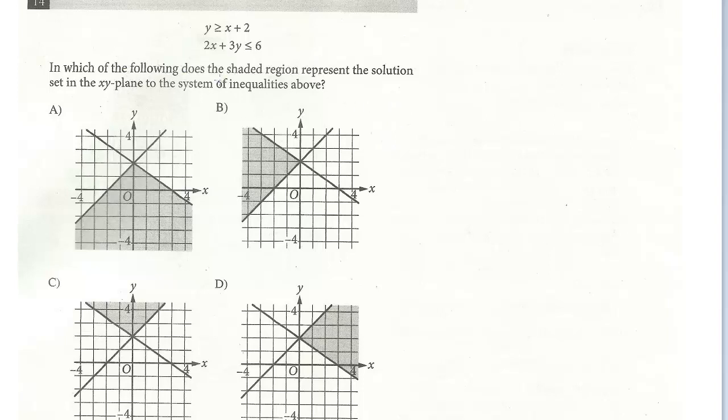In which of the following does the shaded region represent the solution set in XY plane to the system of inequalities above? So we have two inequalities and we have to find the solutions. They actually give us the graph for both of these. You don't even have to worry about graphing them.